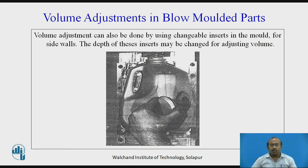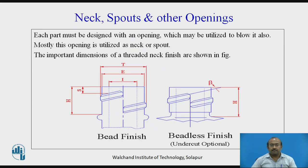Volume adjustment in blow molded parts can be done by using changeable inserts in the mold for side walls. The depth of these inserts may be changed for adjusting the volume. Neck spouts and other openings: each part must be designed with an opening which may be utilized to blow it. Mostly this opening is utilized as a neck or spout. The important dimensions of threaded neck finish are shown in the figure.